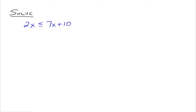Very similar to when solving linear equations, our goal is to isolate the x. So we can subtract 7x from both sides, and that would give us negative 5x is less than or equal to 10. And then to get the x by itself we need to divide both sides by negative 5.